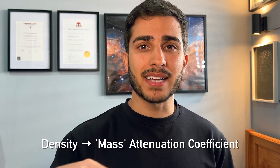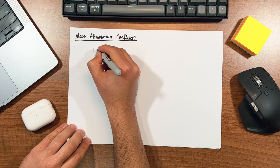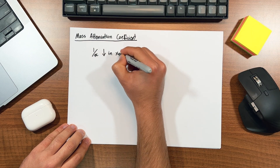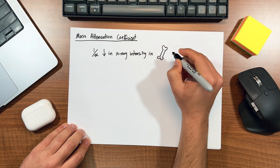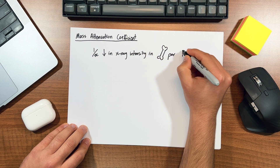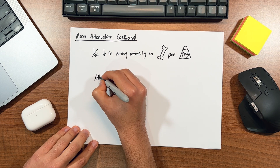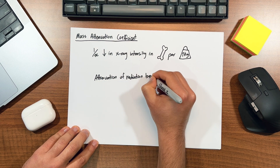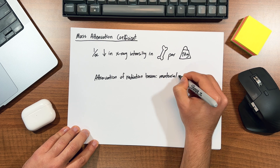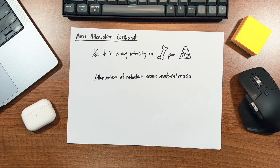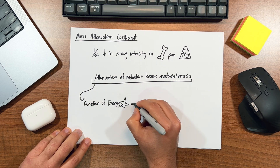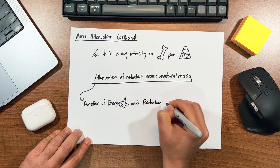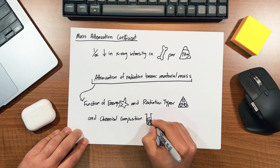However, the level of attenuation also depends on the density of the attenuator, and that's where the mass attenuation coefficient comes in. It is defined as the fractional reduction in x-ray intensity that occurs in a material per unit mass — or think of it as the ratio of the attenuation of a radiation beam to the mass of the material it passes through. This is a function of both the energy and type of radiation, and also the chemical composition of the material.